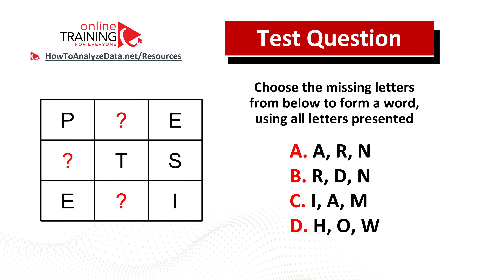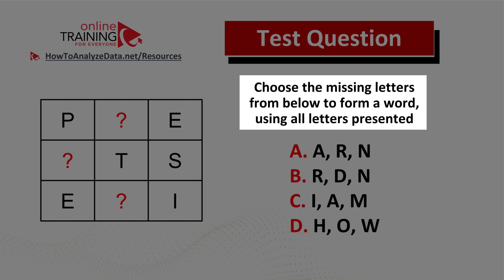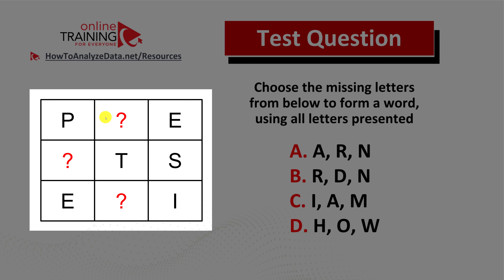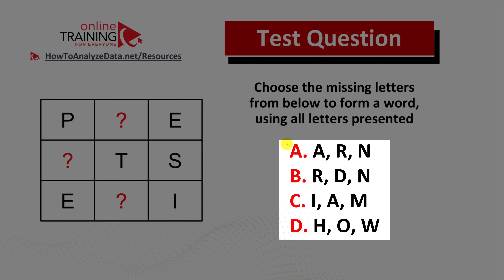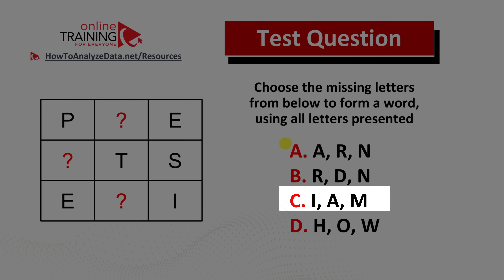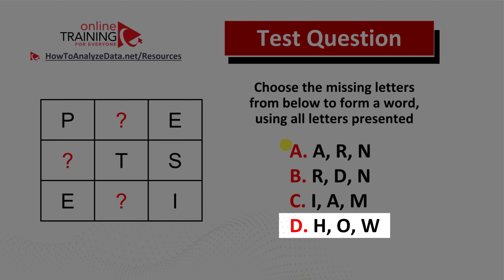Let's review the next question, which tests your verbal reasoning skills. Choose the missing letters from below to form a word using all letters presented. You have a three by three box with three letters missing. You need to try to form a word and populate those three missing letters from four choices: choice A, A-R-N; choice B, R-D-M; choice C, I-A-M; and choice D, H-O-W.